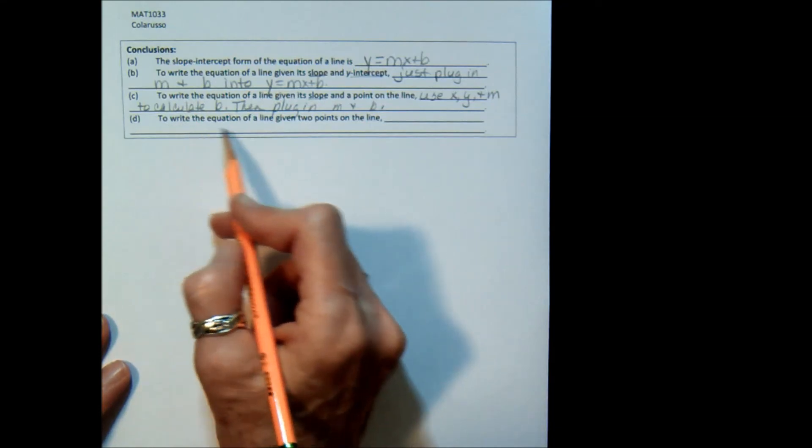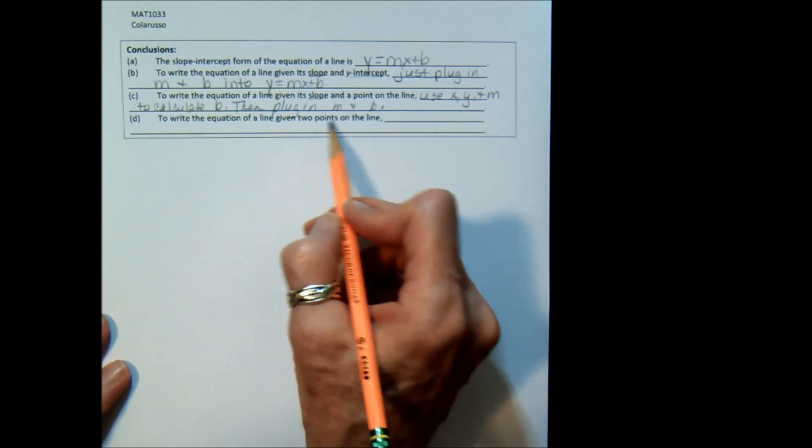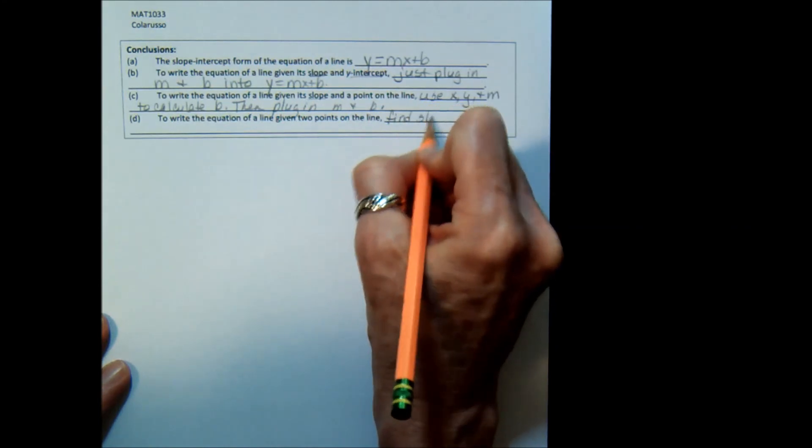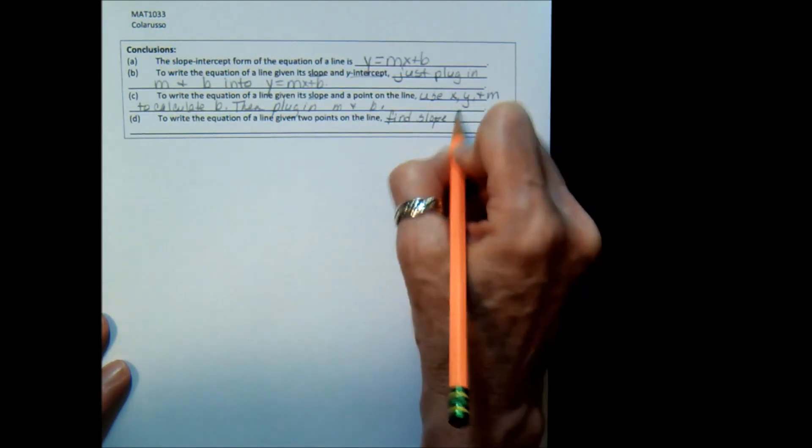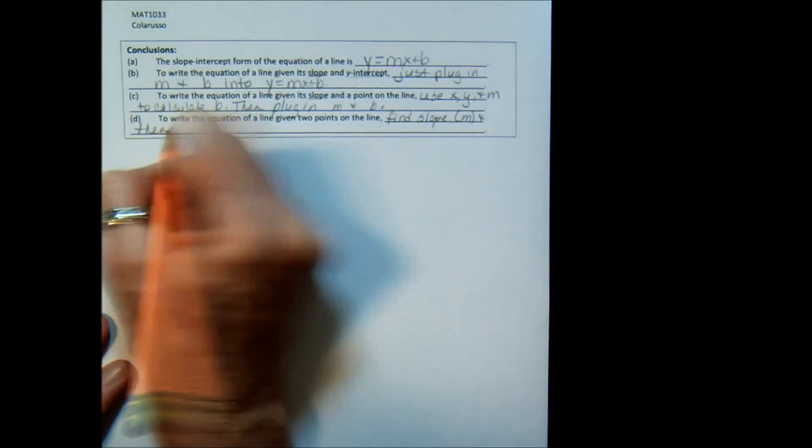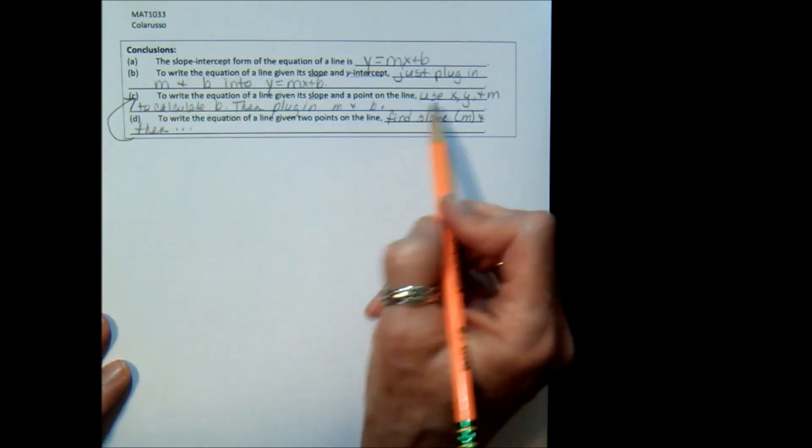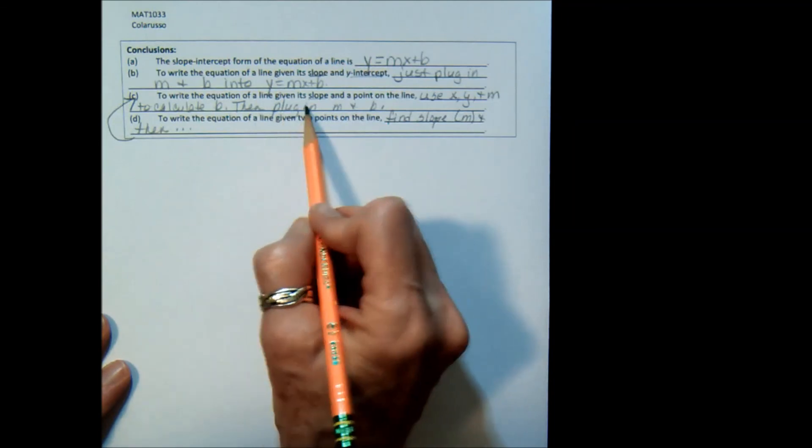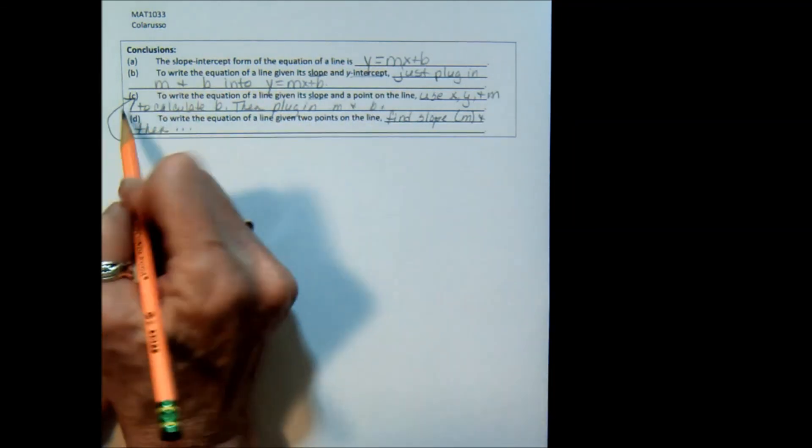Finally, to write the equation of a line, if you are given two points on the line, you first find slope using the two points, which is m. And then, and then I'm just going to write this, you go back to c. You use x, y, and m to calculate the b, and then you plug in m and b. So each one of these kind of leads back to the one before.